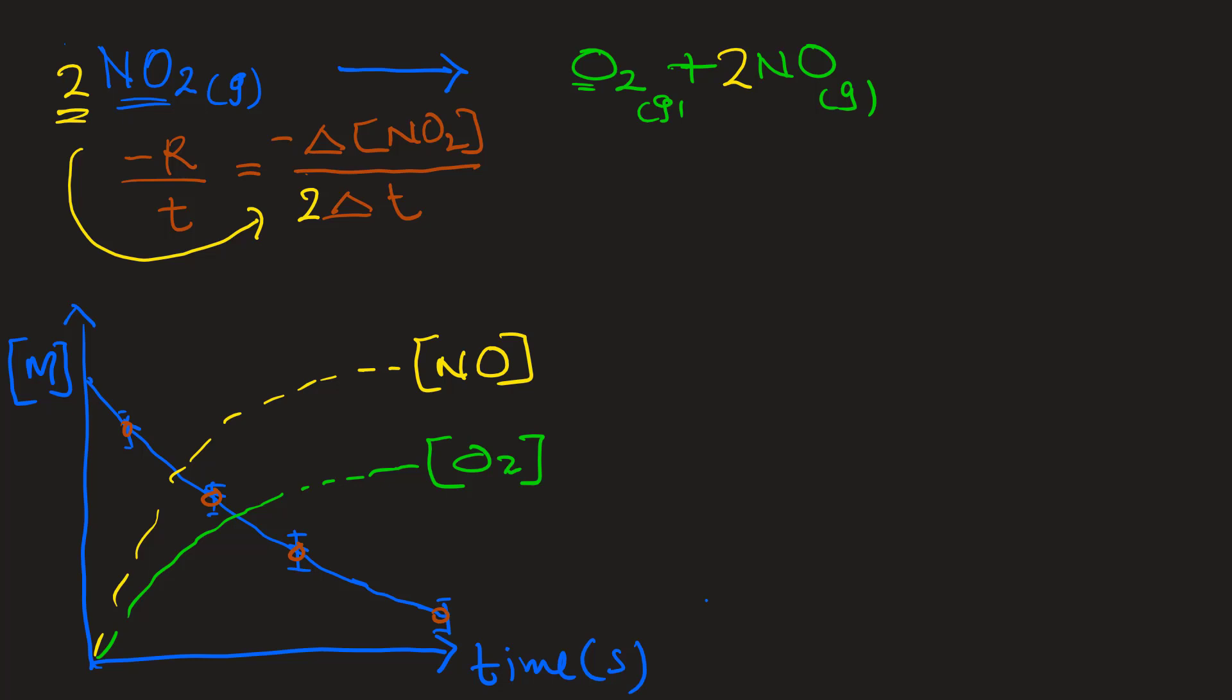Now, similarly, you can write gaining product over time, also the rate for that reaction, plus delta P over T. In seconds, minutes, and days, whatever the T is, right?